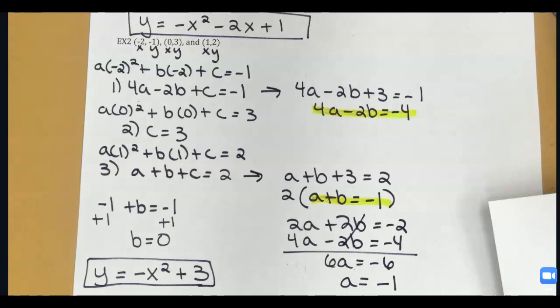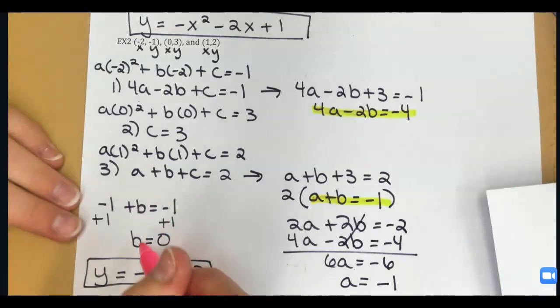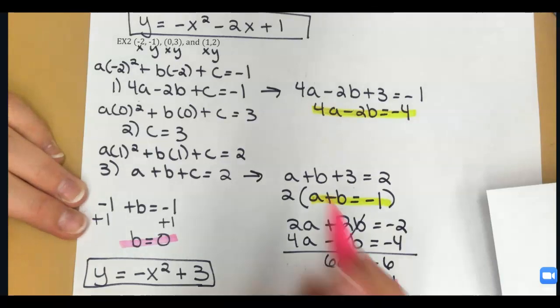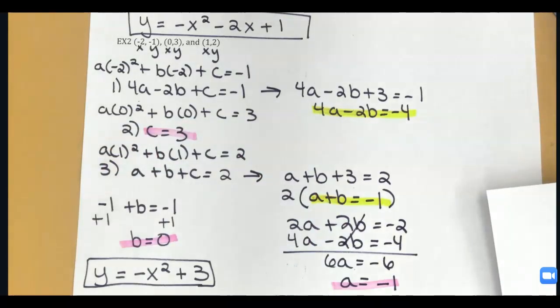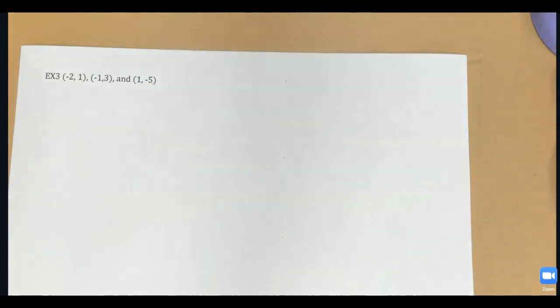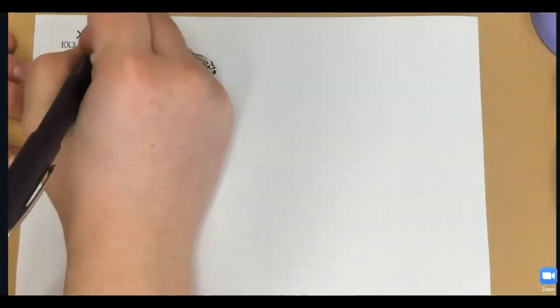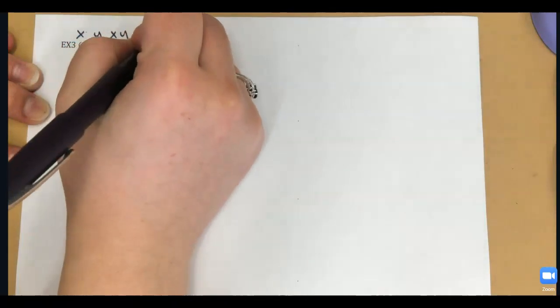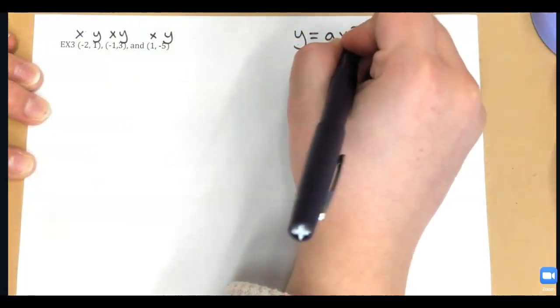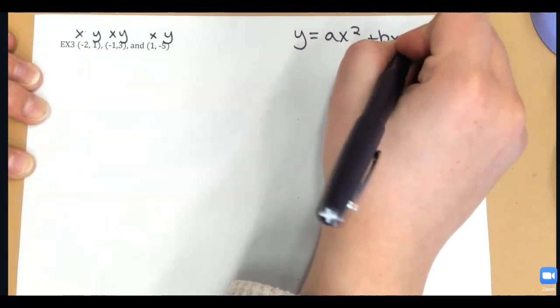Both of those problems were nice because we could find one of our A, B, or C values instantly. But what happens when that's not the case? We're going to have to refresh your memory on solving a three-variable system. The first process is still the same — set up three equations using your XY pairs. Remember, Y equals AX squared plus BX plus C.